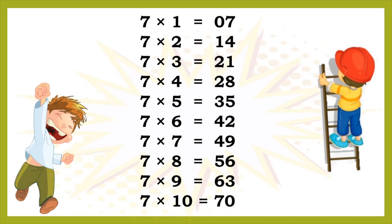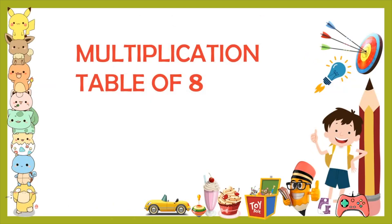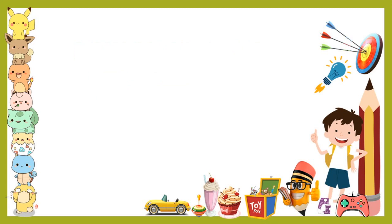Now let's look at the multiplication table of 8. Here we will write numbers from 0 to 8 in two columns. The first column: 0, 1, 2, 3, 4. And the second column: 4, 5, 6, 7, 8. Remember to repeat the number 4 in the second column.